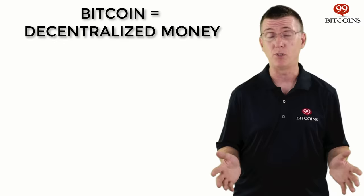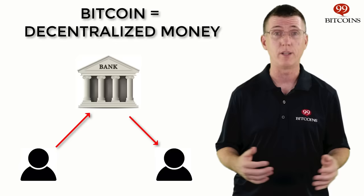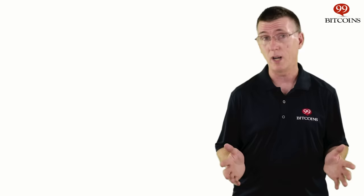Bitcoin was created as a decentralized alternative to the banking system. This means that the system can operate and transfer funds from one account to the other without any central authority. With a central authority, transferring money is easy — just tell the bank you want to remove $50 from your account and add it to someone else's account. The bank has all the power, since the bank is the only one allowed to update the ledger that holds the balances of everyone in the system.